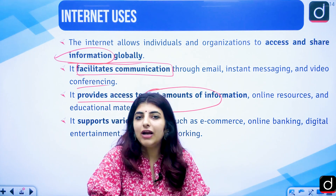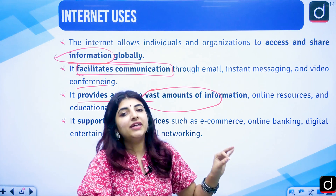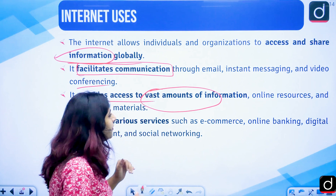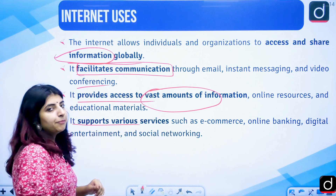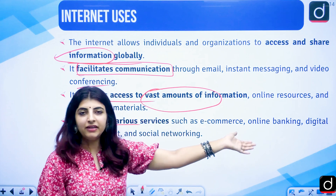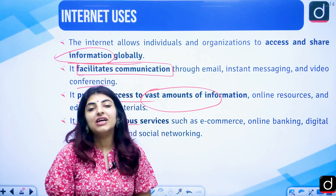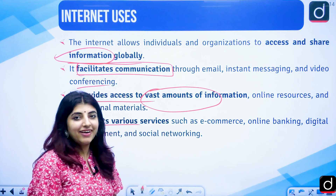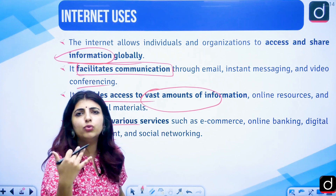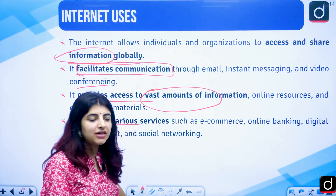The curiosity that we all have — we want an answer to each and every question — and that can be found over the internet because it contains vast amounts of information. Internet also supports various services such as e-commerce where you buy things, online banking where you can view your banking statement and make transactions using UPI, and digital entertainment where you can view content on Jio Cinema, Netflix, Amazon Prime, and Hotstar.